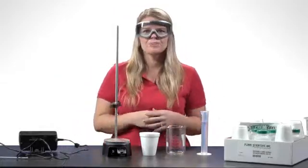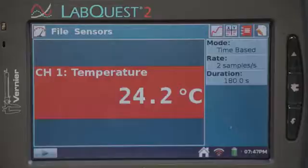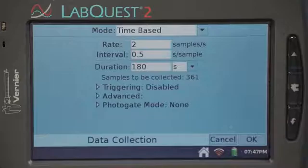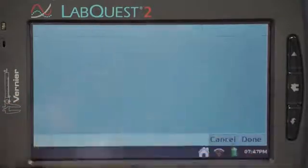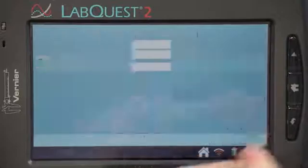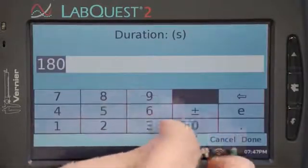Once the probe is plugged in, we'll need to change the data collection parameters. To do this, tap the mode button, change the rate to 1 sample per second, and then change the duration to 300 seconds.